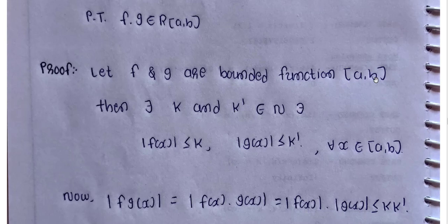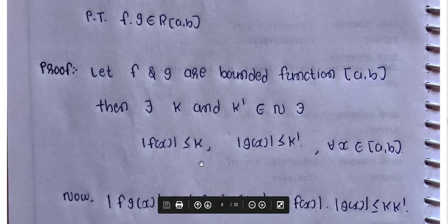Let f and g be bounded functions on closed interval [a, b]. Then there exist k and k' belonging to the natural numbers such that f of x is less than or equal to k, and mod of f of x is less than or equal to k, mod of g of x is less than or equal to k', for every x belonging to closed interval [a, b].